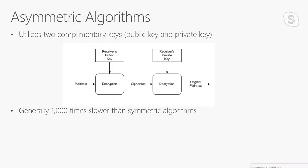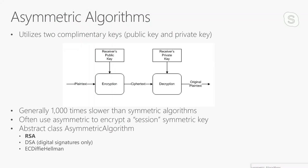The problem with asymmetric is that it's about a thousand times slower than symmetric algorithms. It's great because it's easy to distribute keys, even with people you haven't worked with before. In practice, like HTTPS and TLS, they actually use asymmetric to encrypt a session symmetric key — they generate a random symmetric key, exchange it using asymmetric encryption so it's safe, and then continue with symmetric. The popular class we'll focus on is RSA. Let's do a quick demo.